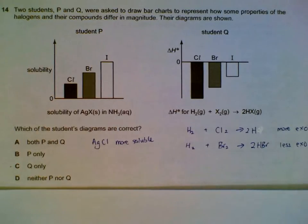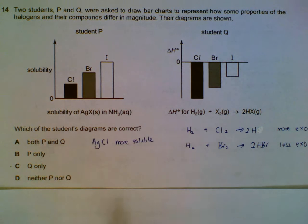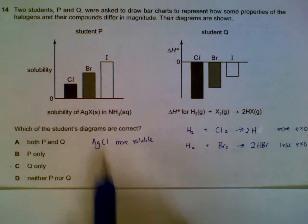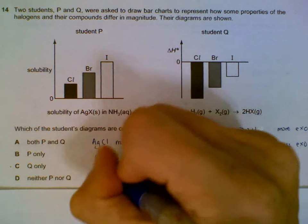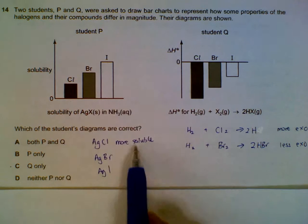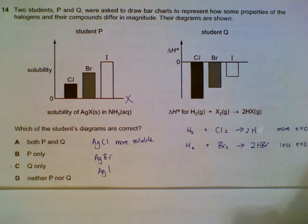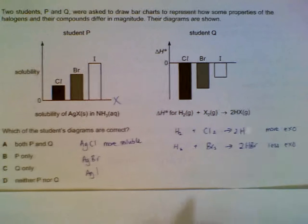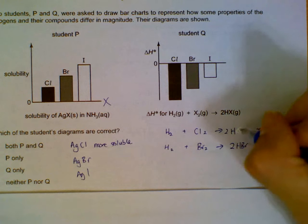Number fourteen: two charts. First, the chart comparing solubility of the halides in ammonia. AgCl is more soluble than AgBr, which is more soluble than AgI, so the solubility by iodide should be decreasing.